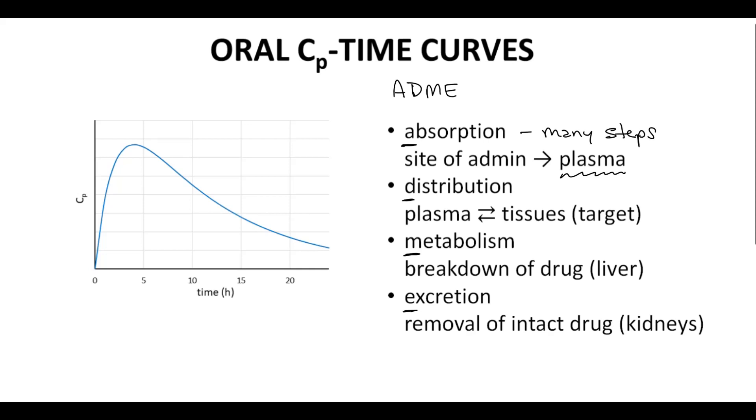The rate of absorption is often communicated by the Tmax of a CP time curve. Tmax is the time after the dose at which the CP rises to its maximum value, CPmax. The time before Tmax is normally called the absorption phase.